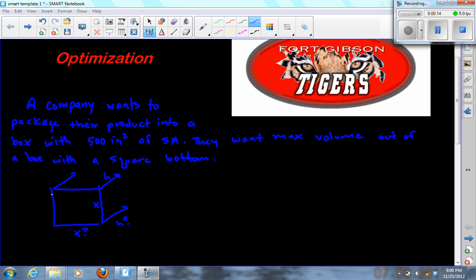This panel right here would be length times width, x times x, and this panel right here would be x times h. So you've got your x squared and your xh, and this up here would be xh.